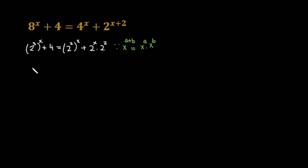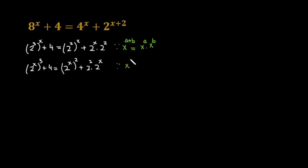In the next step I am going to swap the exponents. This equation can be written as 2 raised to the power x raised to the power 3, plus 4, equals 2 raised to the power x raised to the power 2, plus 2 raised to the power 2 times 2 raised to the power x. I am swapping the terms using the law of exponents: x raised to the power a raised to the power b equals x raised to the power b raised to the power a.